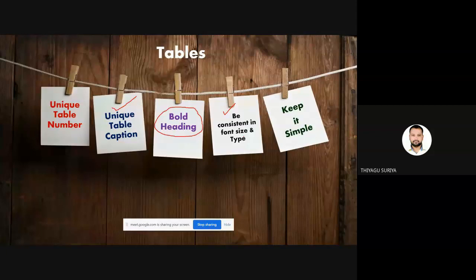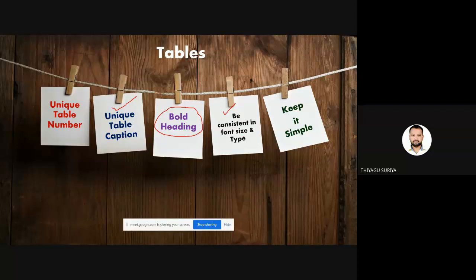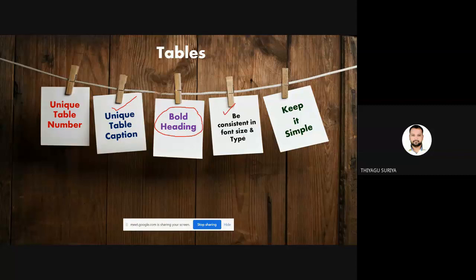Be consistent in font size and type — this is very important. Next, keep it simple. Don't elaborate, don't be too general, don't use very big headings. It should be specific to that heading — from the heading itself, people should be able to understand what the table is describing. When people read the heading of the table, they should understand what it describes. That's why I'm using the term 'keep it simple.'